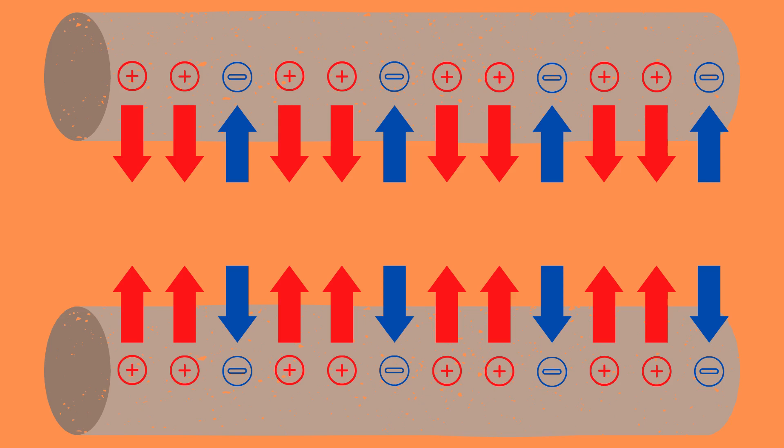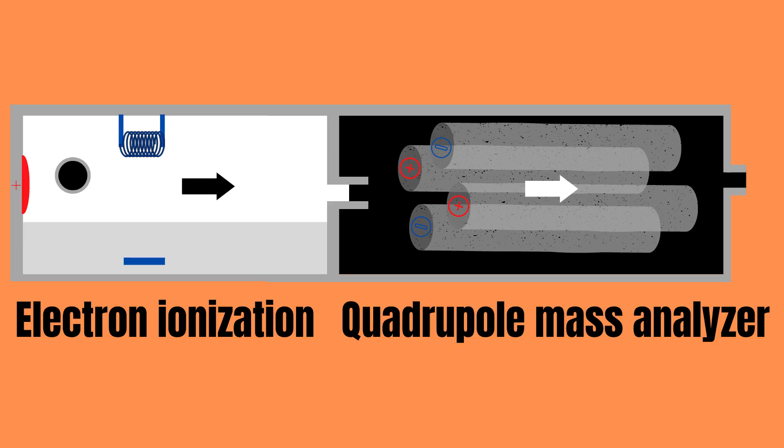By varying the strength of these two magnetic fields, ions of different sizes can be selected by the mass analyzer. Therefore we vary these magnetic field strengths in order to scan for different mass-to-charge ratios of the sample.